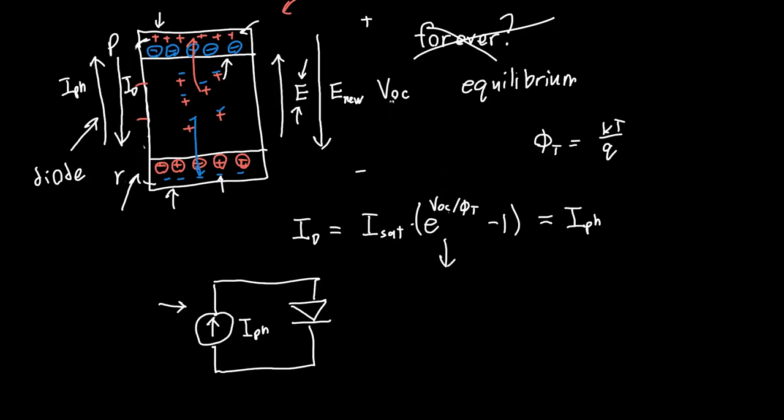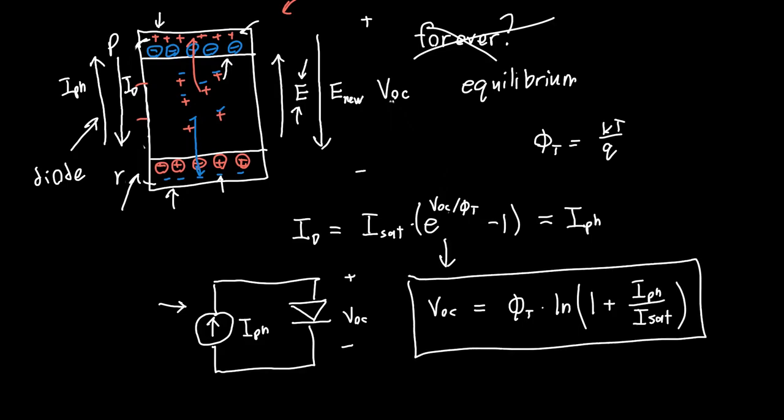So from here, we can calculate this open circuit voltage just by rearranging this equation. So divide by ISAT, move the one and take a logarithm. And you'll just get that the open circuit voltage is just the thermal voltage times the natural log of one plus your photocurrent over your reverse saturation current. And this is our open circuit voltage. Or this is the voltage that develops across this diode, which we can actually measure when it's not attached to anything.